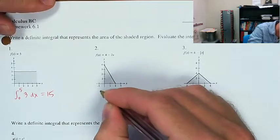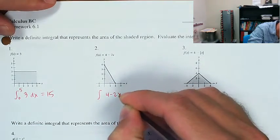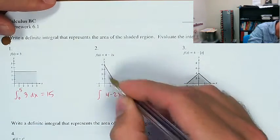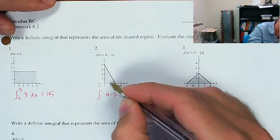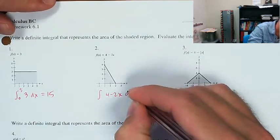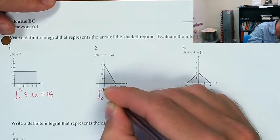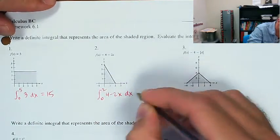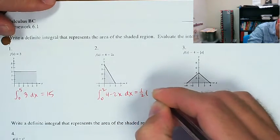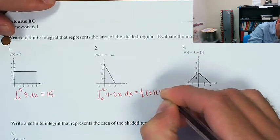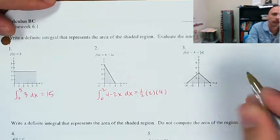This is going to be an integral of 4 minus 2x — that's just the integral of f(x) — as x runs from 0 to 2. And that's going to be one-half times the length of the base times the length of the height.